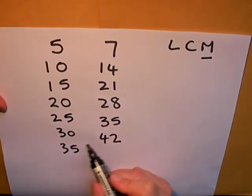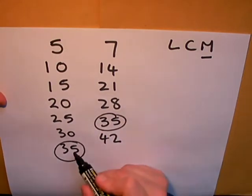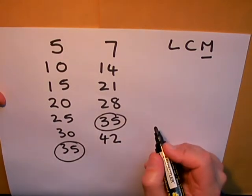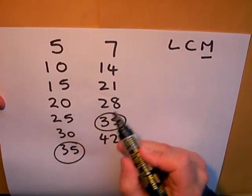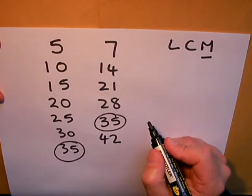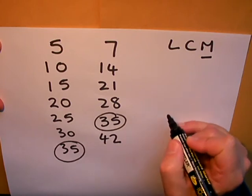You'll notice that we arrived at 35, which appears in both lists, so that's a common multiple. Because there are no other numbers in the lists lower than 35, the lowest common multiple of 5 and 7 is 35.